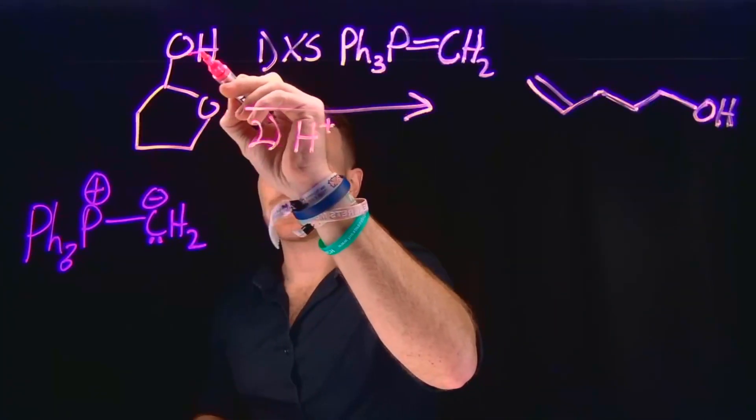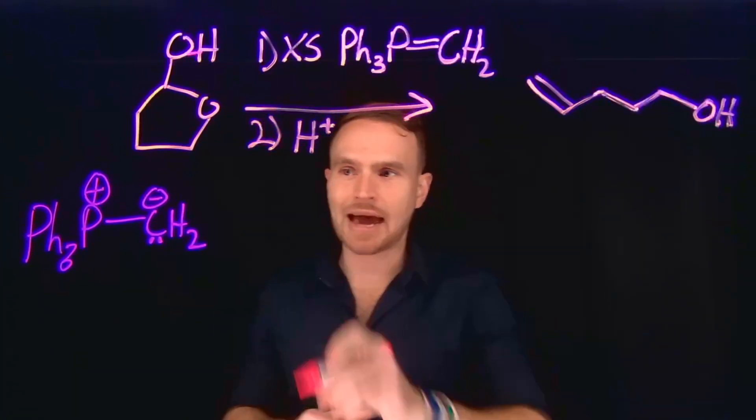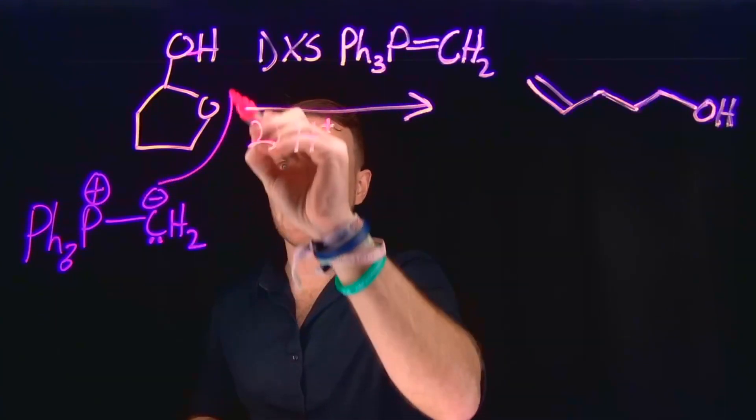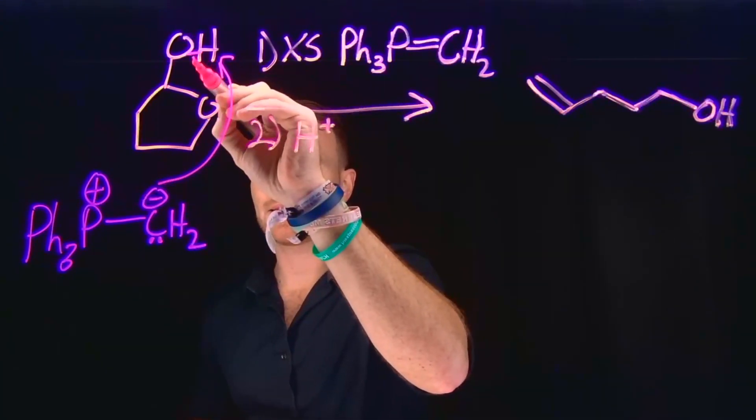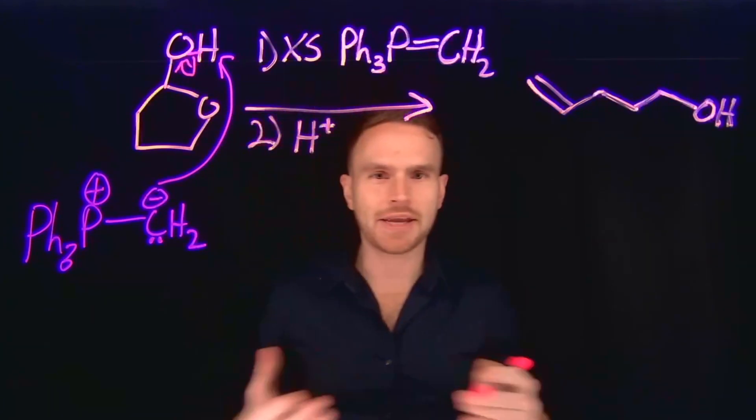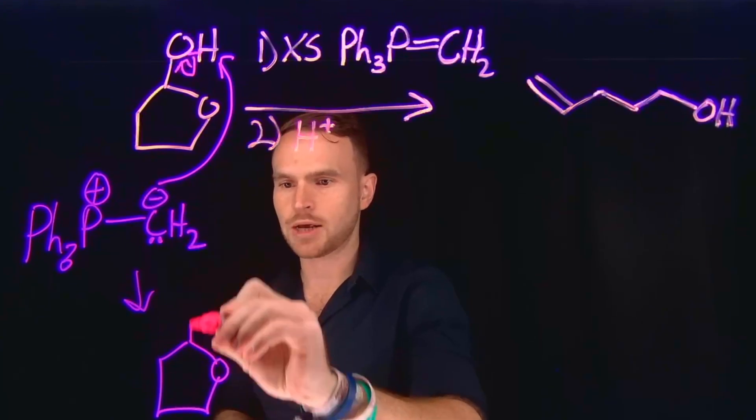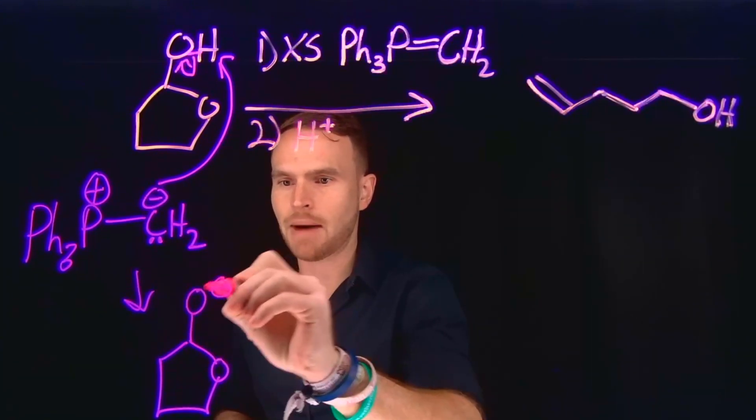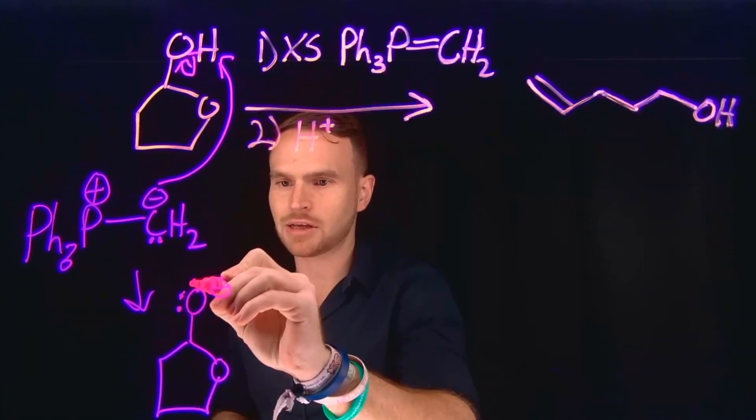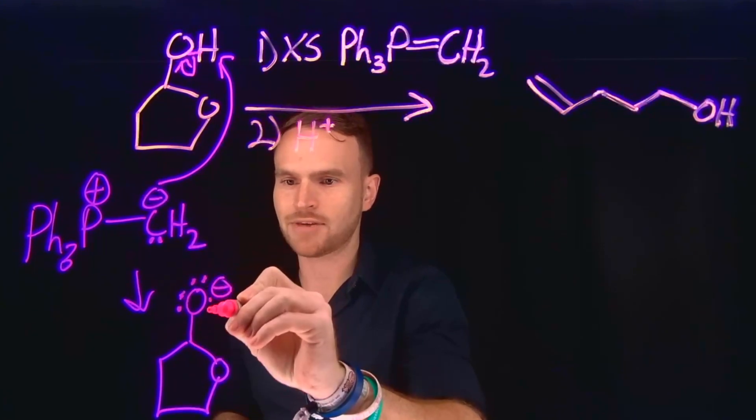So the first step in this reaction is actually going to be deprotonation of this alcohol where this carbanion can come and deprotonate that alcohol to leave behind a negatively charged oxygen species. So this is going to leave us behind with our five-membered ring. But now this is going to be O minus with this oxygen having three lone pairs on it, giving it a negative charge.